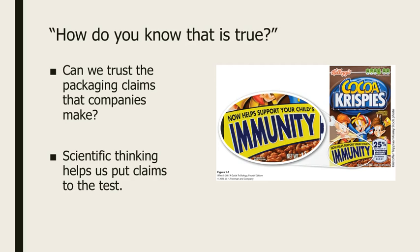We're going to explore how science can be useful in thinking about your life. How do you know when something is true? For example, Cocoa Krispies claims it helps support your child's immunity — can you trust that? Being able to think scientifically helps you put those kinds of broad claims to the test. You might also have seen yogurt advertised as helping prevent colds or flu.